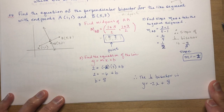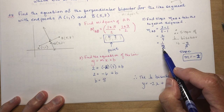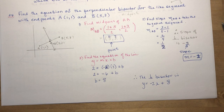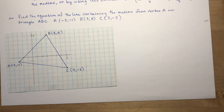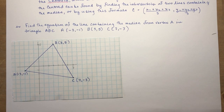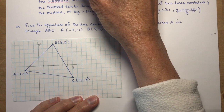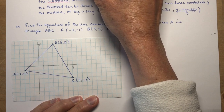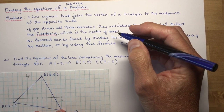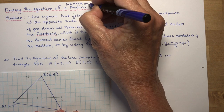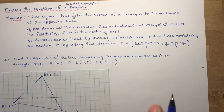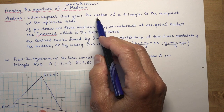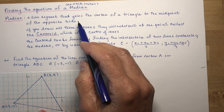Therefore the perpendicular bisector is y = −2x + 8. There's the equation of your perpendicular bisector. Now let's talk about medians because they're a little trickier and kind of interesting. We're finding the equation of a line which contains the median. Because the median is just a line segment — a line segment that joins the vertex of a triangle to the midpoint of the opposite side.